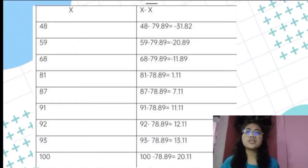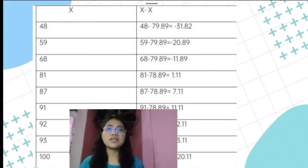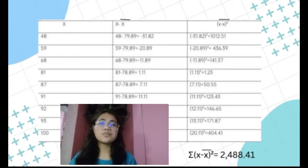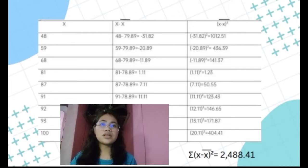For the table, the first column, x, contains our values: 48, 59, 68, 81, 87, 91, 92, 93, and 100. The second column is x minus x-bar — we subtract the mean of 79.89 from each given number to get those values. The third column is x minus x-bar raised to 2, meaning those results are squared. After squaring and adding all the answers, the total is 2,488.41. That is our summation of x minus x-bar raised to 2.